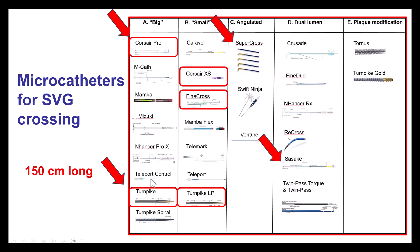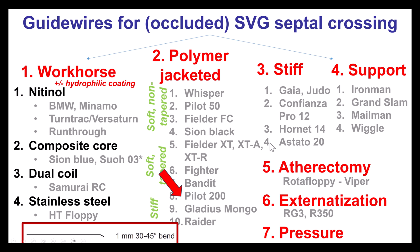The bigger single-lumen microcatheters like the Corsair and Turnpike are preferred because they provide good support. The angulated microcatheters are very useful for navigating the angulation of the distal anastomosis, and sometimes the dual-lumen microcatheters can help as well. For crossing occluded SVGs, the stiff polymer-jacketed wires are the ones that are preferred.